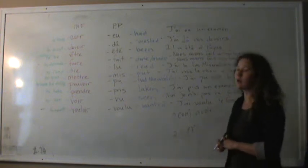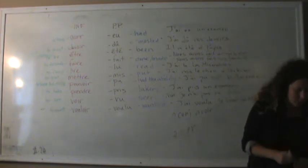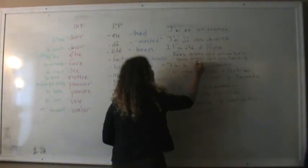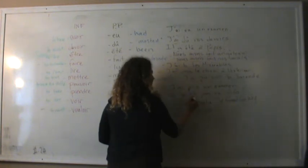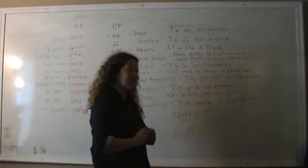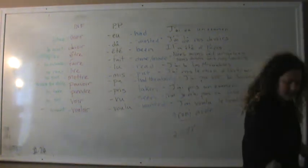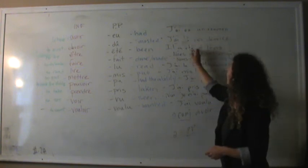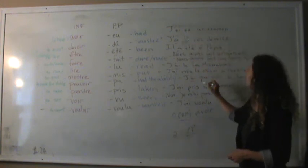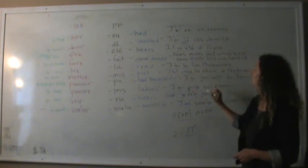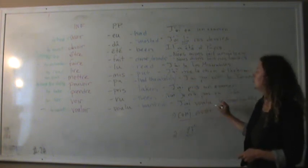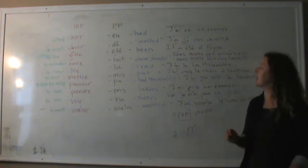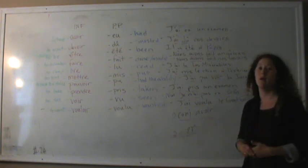So, these are your irregular past participles. And if you will notice, every single one of them has a conjugation of avoir. Right? And then, every one of them utilizes an irregular past participle. Eu. Dû. Été. Fait. Lu. Mis. Pu. Pris. Vu. Voulu. Alright? So, these are your irregular past participles that go with avoir. Bonne chance.